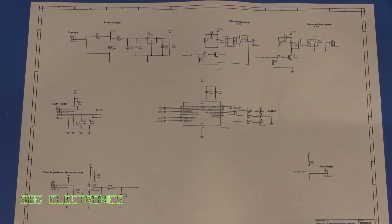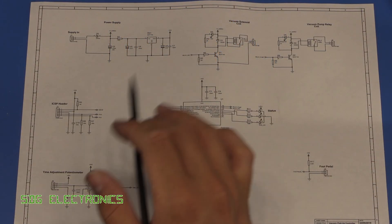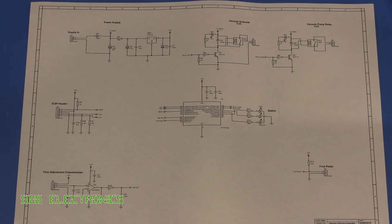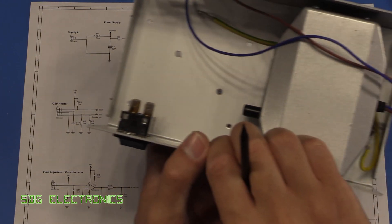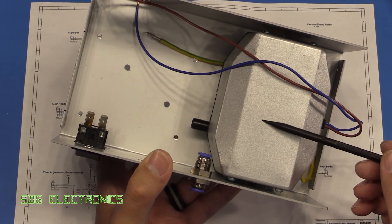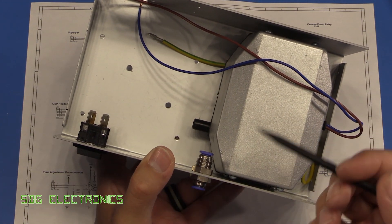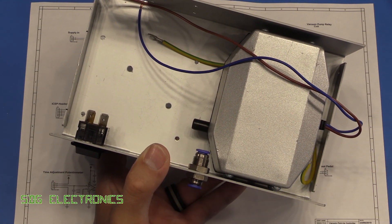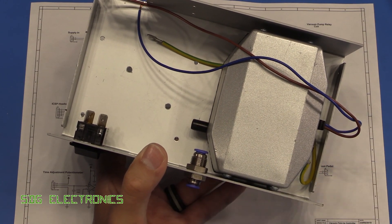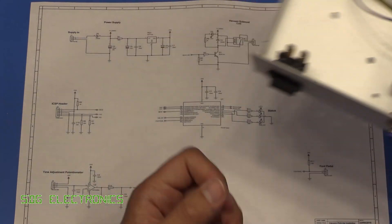So here we have the schematic for the board and actually it's way over complicated really for what we need. The only reason that I've gone with making a PCB is that in the case of using a little vacuum pump like this the pump would be running the whole time that the device was turned on and the main feature that I wanted was if the foot pedal hadn't been pressed for a certain period of time then the pump would turn off just to save life and power.